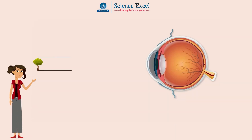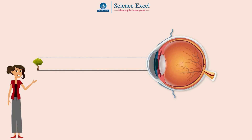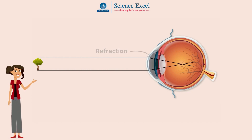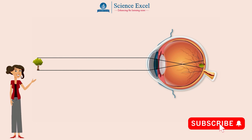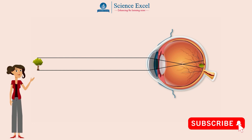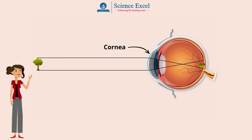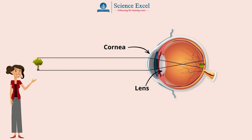As light enters the eye, it must be refracted or bent so that we can see the image clearly. We call this focusing. About 60% of the refraction of the light rays is done by the cornea and the rest is done by the lens.